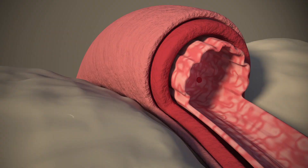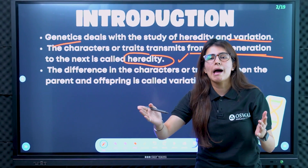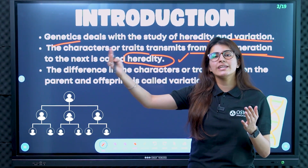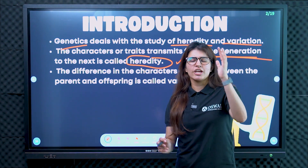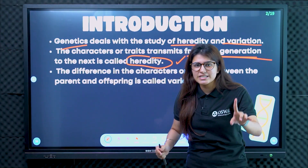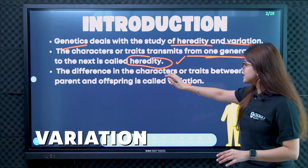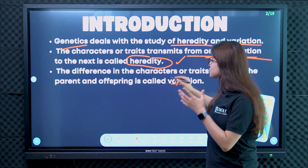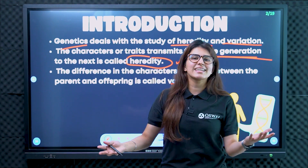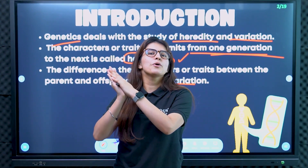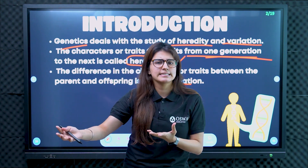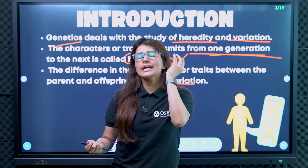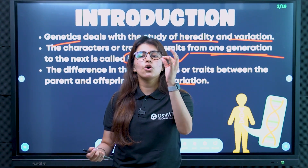Like diabetes is very common and it is usually passed on from generation to generation — that is heredity. Now it is not necessary that child and parent will be exactly alike; there will also be some variations and differences. The difference in the characters or traits between the parent and the offspring is called variation. We are all different from one another, which makes us special — like me, there will not be an exact copy.